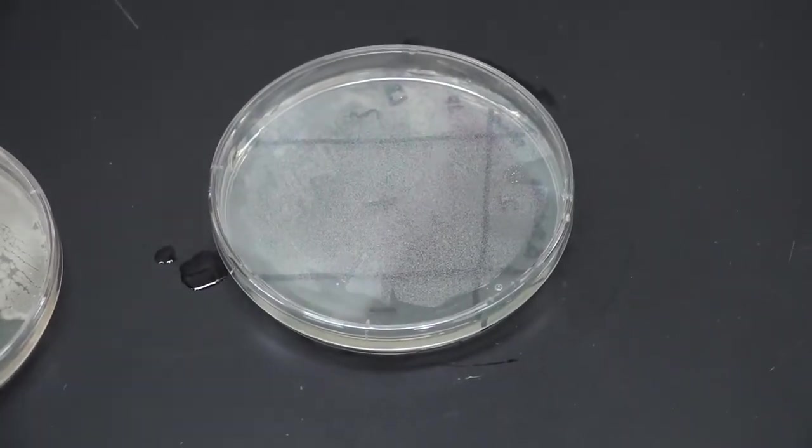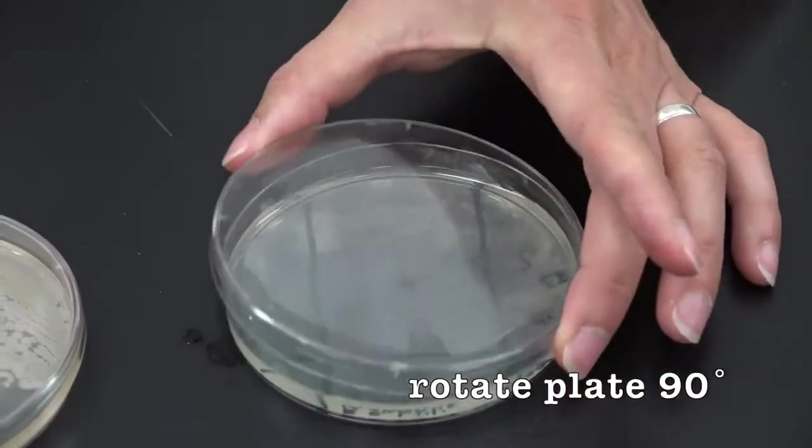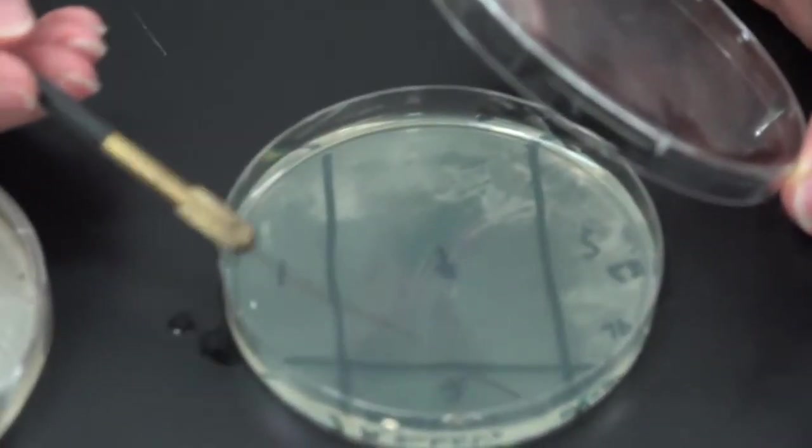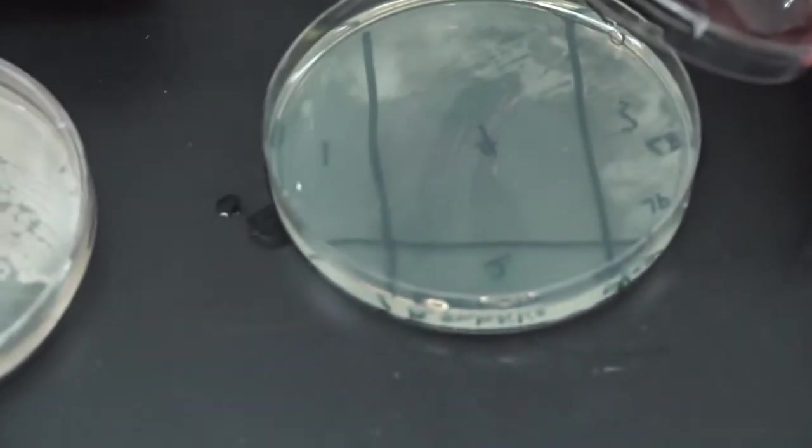Again, sterilize your loop. We're going to repeat that procedure for quadrant three. Streak from two to three.